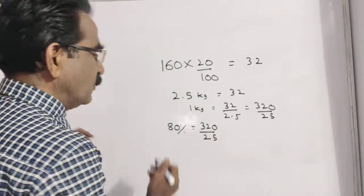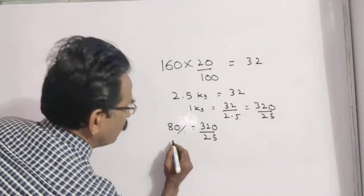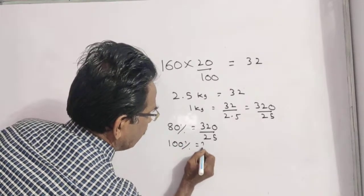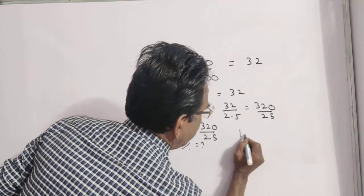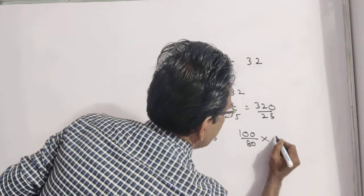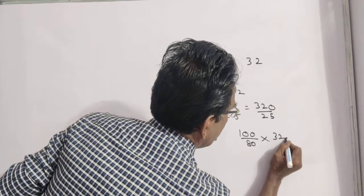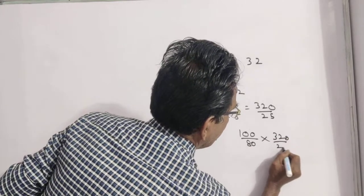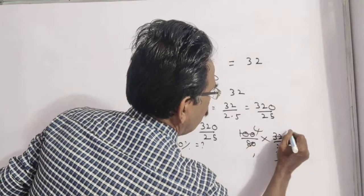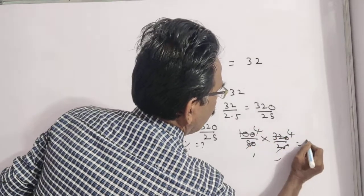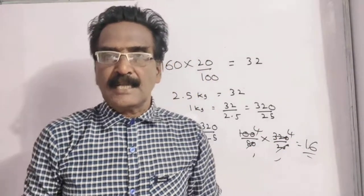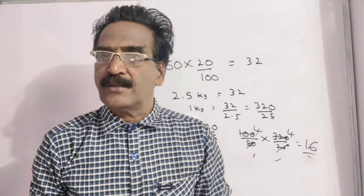To find the original price, we need 100 percent. So 100 percent equals 100 by 80 into 320 by 25, which gives us 16 rupees. So 16 rupees is the original price of the sugar.